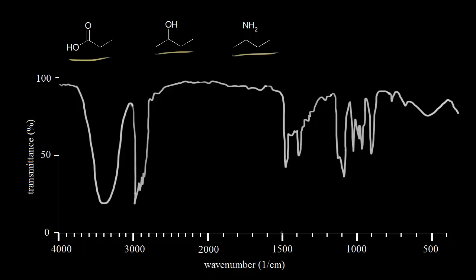So we could draw a line around 1500 and ignore the stuff to the right and focus in on the diagnostic region. And here is your double bond region. And I don't see a signal at all in the double bond region. I certainly don't see a very strong carbonyl stretch. And so the carboxylic acid is out.